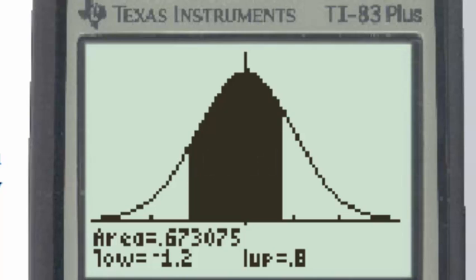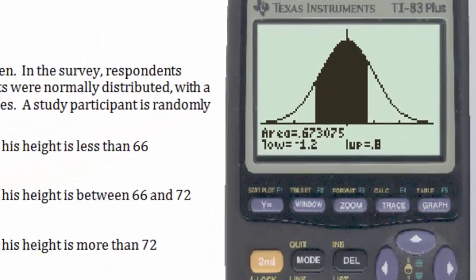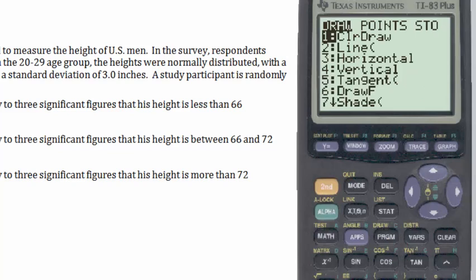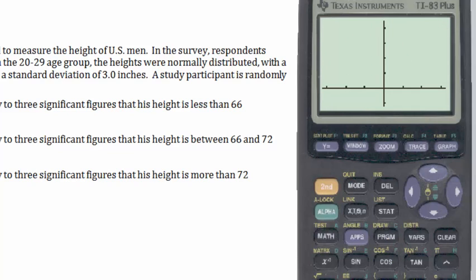After doing any problem on the TI-83 using the graphing feature, it's a good idea to clear this drawing, which can be done by hitting the second draw button, and then simply hitting the enter key. Going back to the home screen, second function quit, we'll clear the home screen as well.